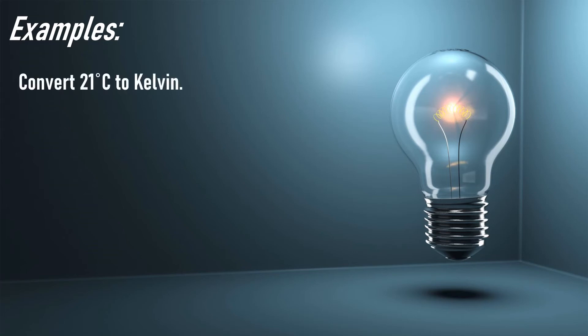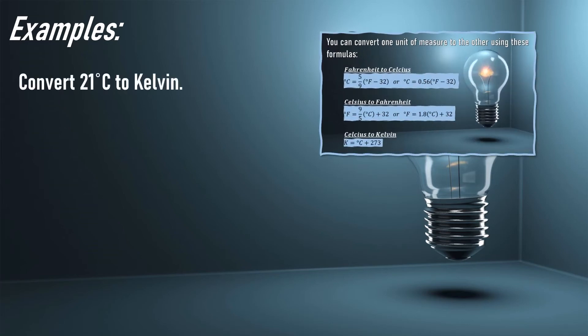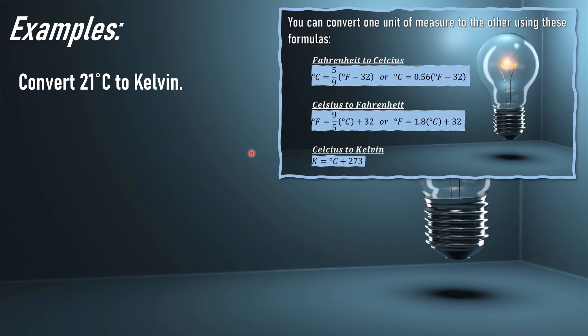Additional example: compare 21 degrees Celsius to Kelvin. Let us use the third formula, which is Celsius to Kelvin. The formula for Kelvin is °C + 273. Substitute the given, which is 21 degrees. This becomes 21° + 273. Therefore, 21 degrees Celsius is equivalent to 294 Kelvin.